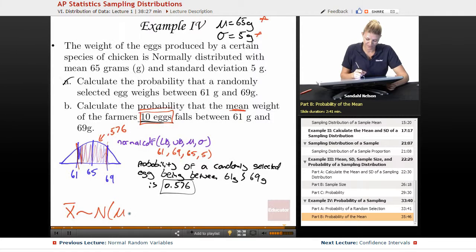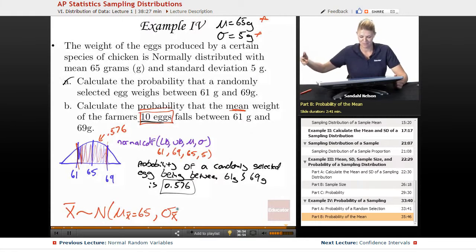We know that the mean of the sampling distribution is just equal to the mean, which is 65, and the standard deviation of the sampling distribution of the sample mean. So we always say the mean of the sampling distribution of the sample mean, and the standard deviation of the sampling distribution of the sample mean,